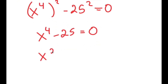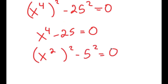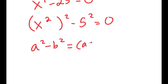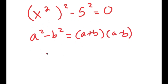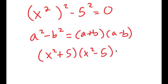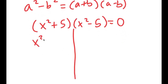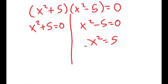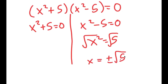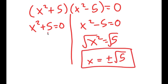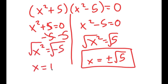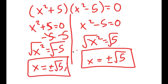I rewrite x⁴ minus 25 as (x²)² minus 5² equals 0, and apply the difference of squares formula a² minus b² equals (a plus b)(a minus b). This gives (x² plus 5)(x² minus 5) equals 0. From x² minus 5 equals 0, I get x equals positive or negative square root of 5. From x² plus 5 equals 0, x² equals negative 5, so x equals plus or minus the square root of 5 times i. Those are the four solutions.